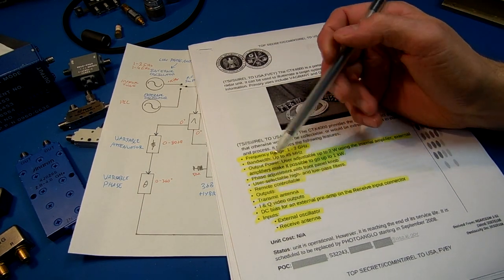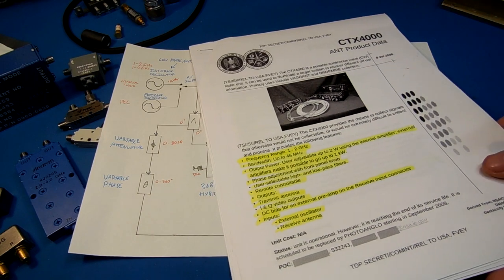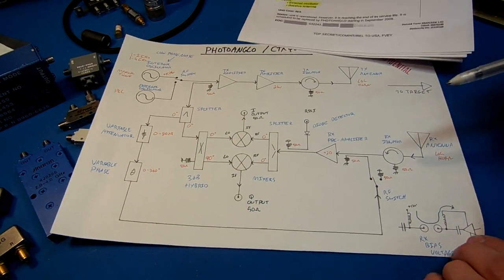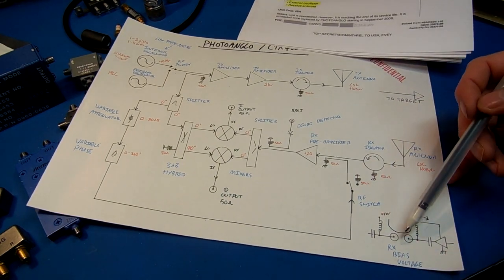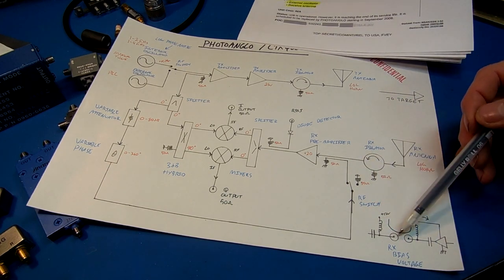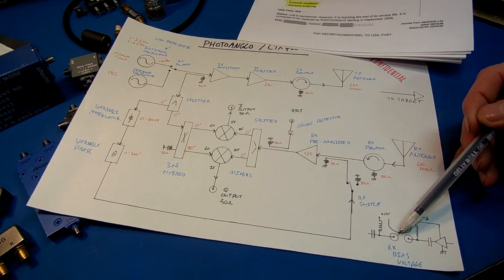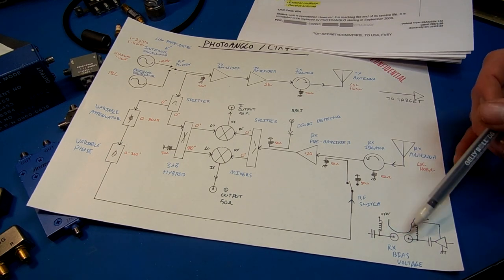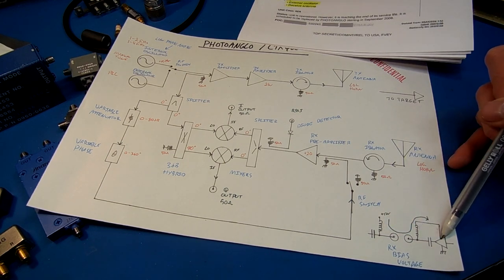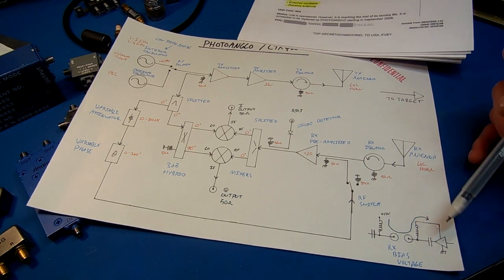DC bias for an external preamp. All it does is on the connector for the receive antenna, there's just an inductor. It adds a little DC bias. And then on your external preamp, there's another inductor that just taps off the voltage. It's used to power the preamp.